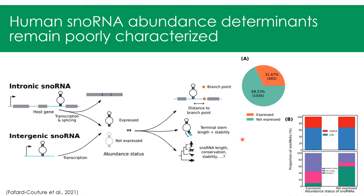We hypothesize that several other features might be important for regulating SNORNA abundance, such as the stability of the terminal stem, the stability of the SNORNA structure, the conservation of the sequence of the SNORNA, and others.